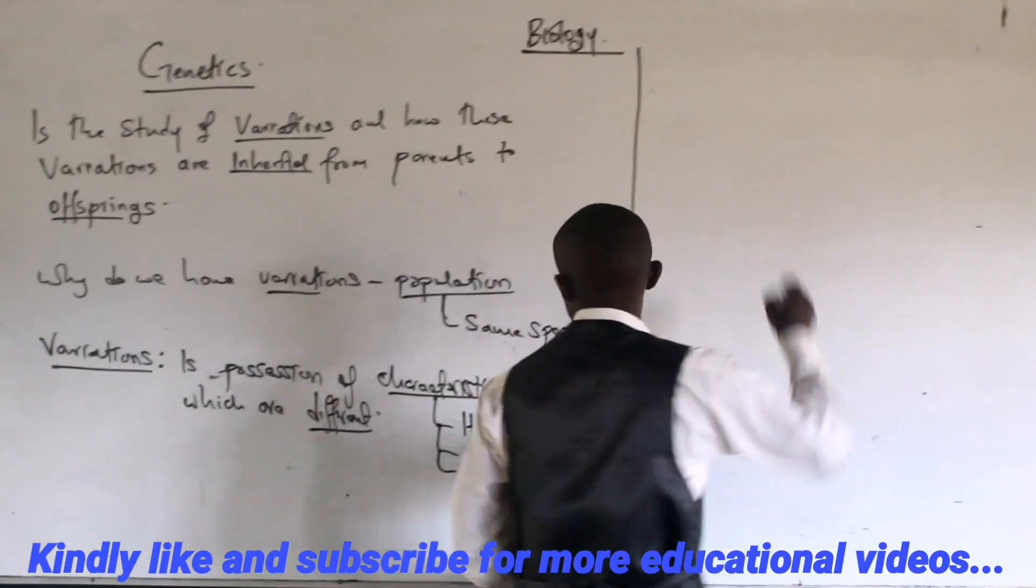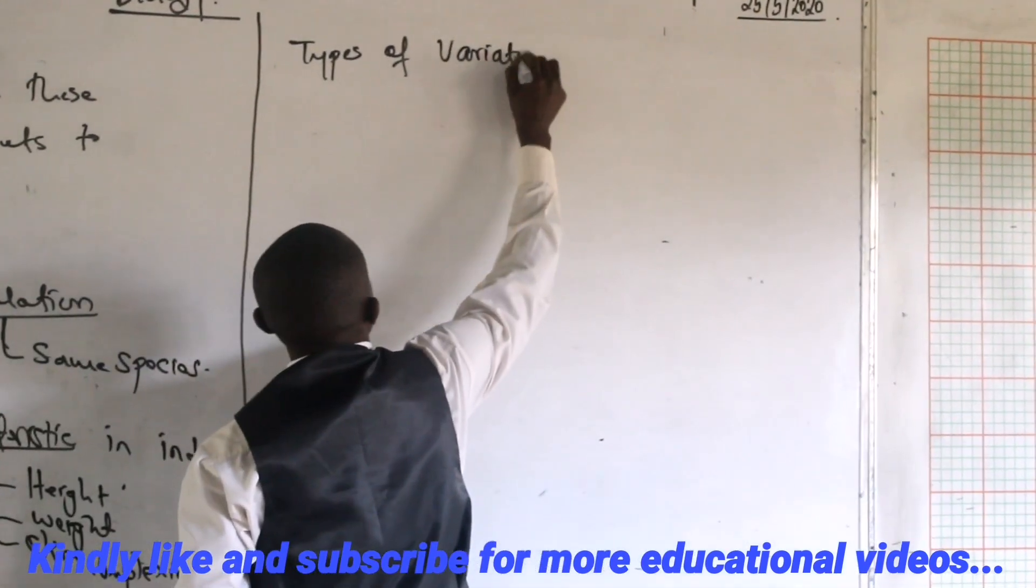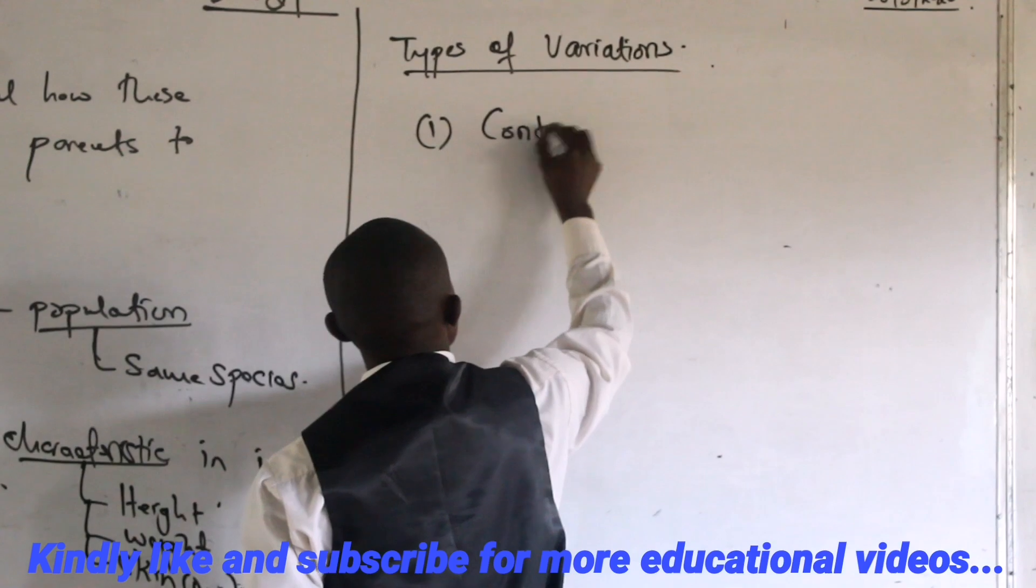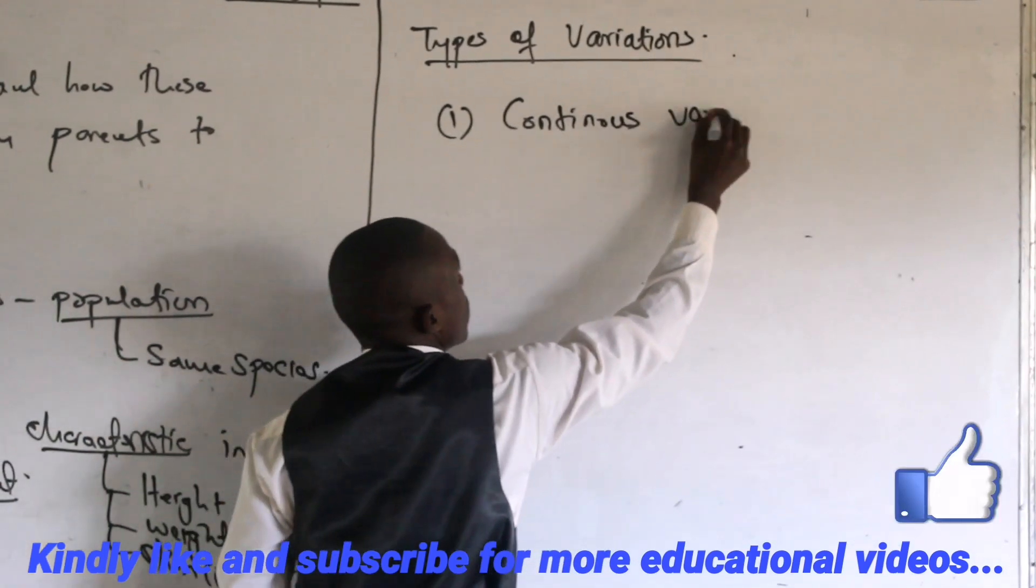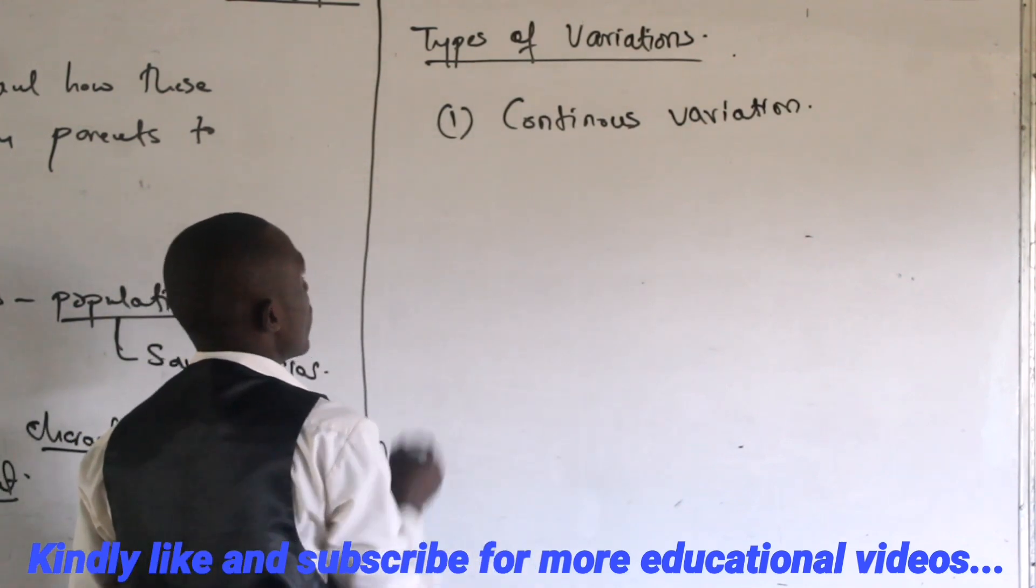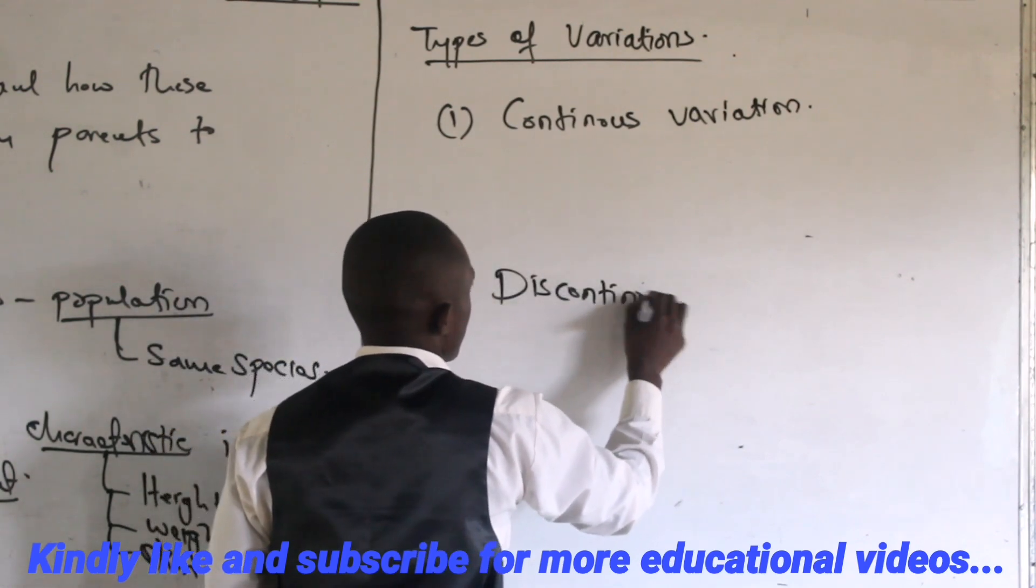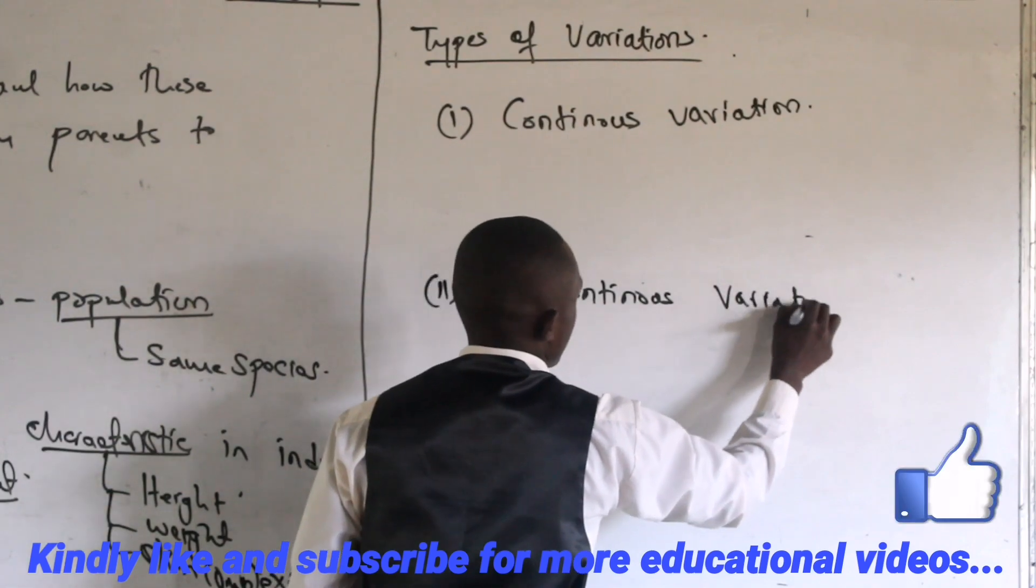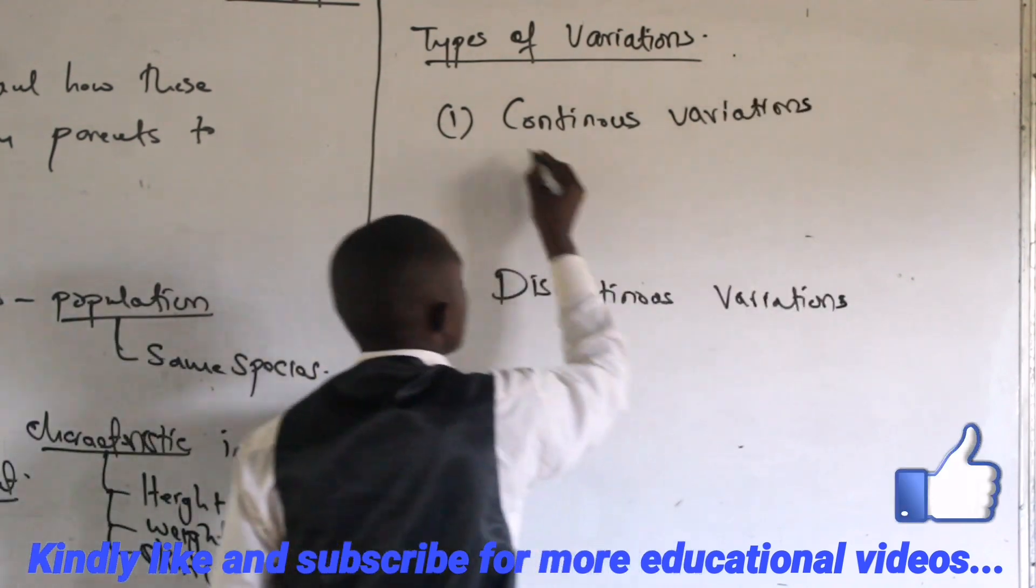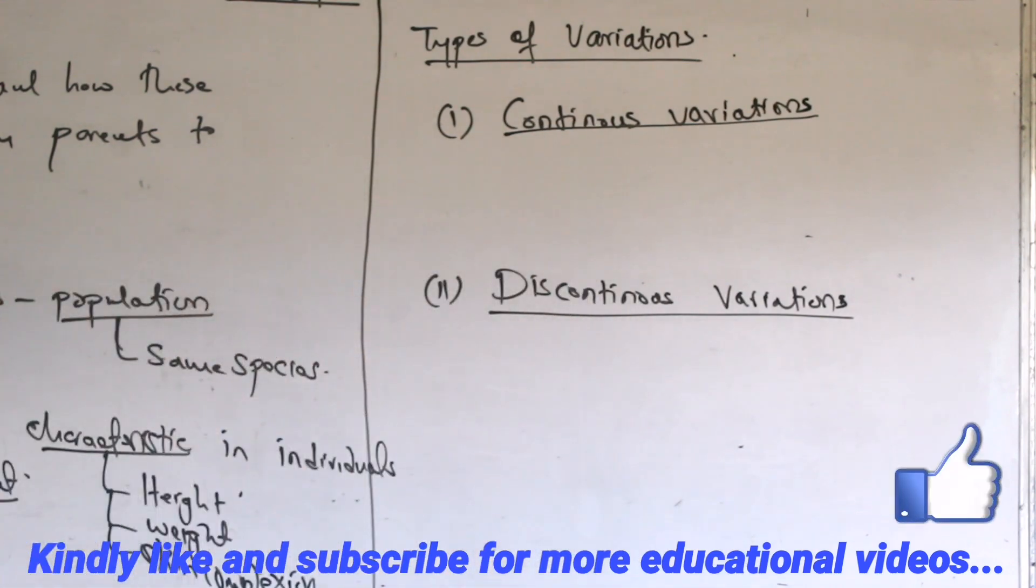We have two types of variation. Number one, we have continuous variation. Number two, we have discontinuous variation. There is a keyword which distinguishes continuous and discontinuous variation.